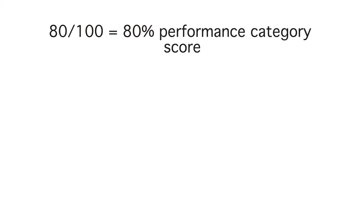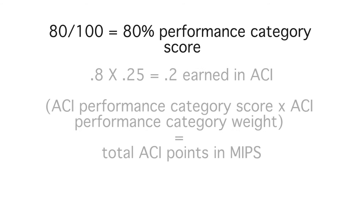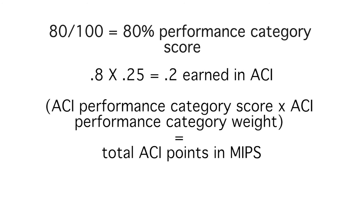For example, if you earned 80 points in Advancing Care Information, you would divide that by the 100 possible points available. This gives you a category-level performance score of 80%. You would then multiply that score by the overall category weight assigned, which is 25%. In this case, 0.8 — the category performance score — multiplied by 0.25, the overall category weight, will result in 0.2 earned in the Advancing Care Information category.